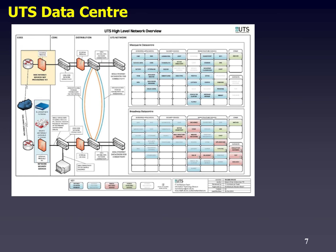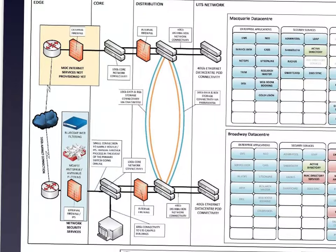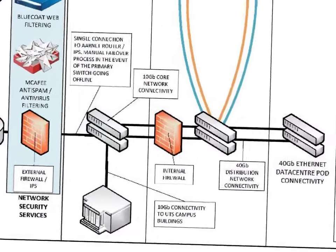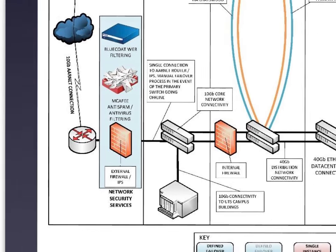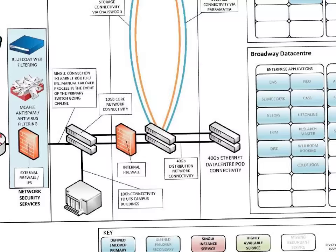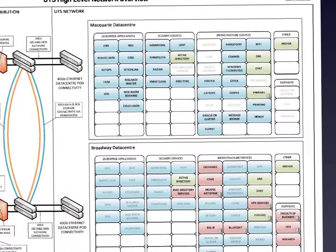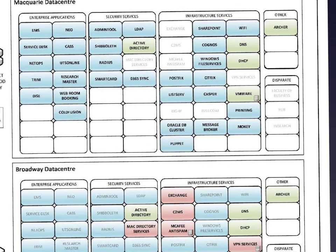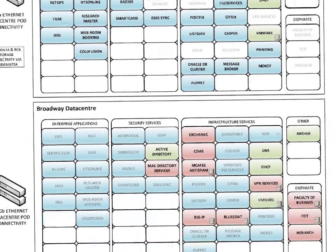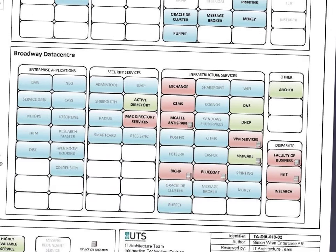This is the UTS infrastructure. It's got a lot of stuff — we've got the Tower with 10 gig core connections, a firewall to the outside world, and a whole pile of internal connections. We've got a 40 gigabit connection via Chatswood and via Parramatta to the Macquarie data center, containing a lot of things. For example, we've got the webroom booking system, UTS Online, databases galore. At our Broadway center we've got the Faculty of Engineering and IT with their own servers, as well as the Faculty of Business with their own servers.